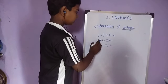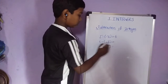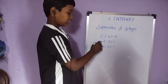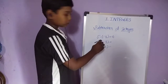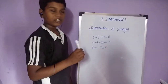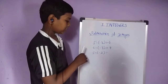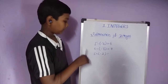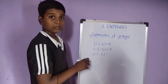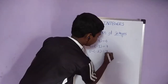Another example: 6 minus bracket minus 1 close bracket. Minus into minus is equal to plus, so 6 plus 1 is equal to 7. Another example: 5 minus bracket minus 2 close bracket. Minus into minus is equal to plus, so 5 plus 2 is equal to 7.